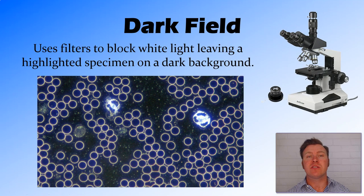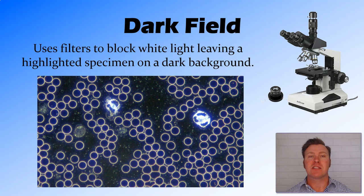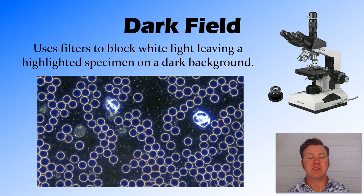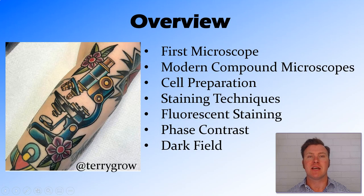Another filter we can use is called the dark field. What it does is, once the light shines through, a filter takes out all of the white light, leaving just the light that has been changed as it comes through the specimen. This is really good for looking at particularly clear specimens, because it gives us a dark background so we get a better idea of what's happening inside the cell.